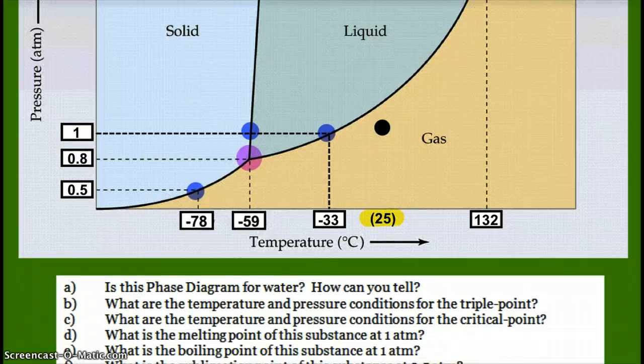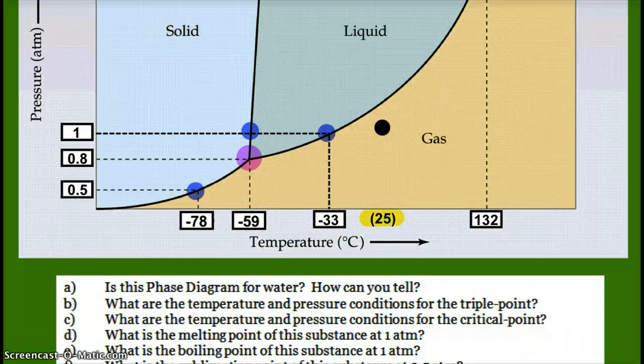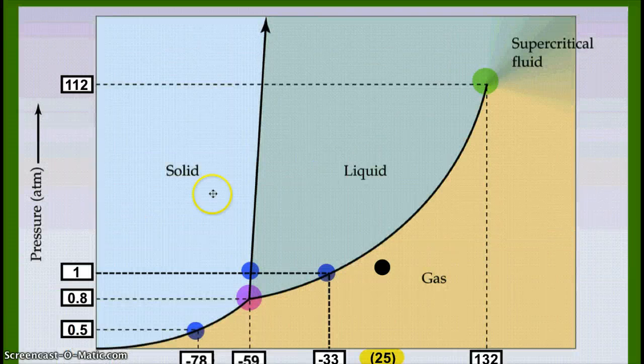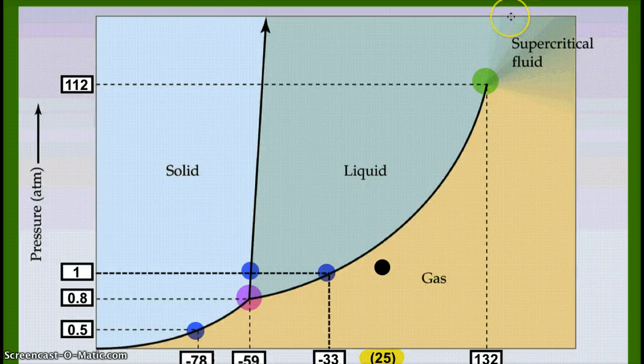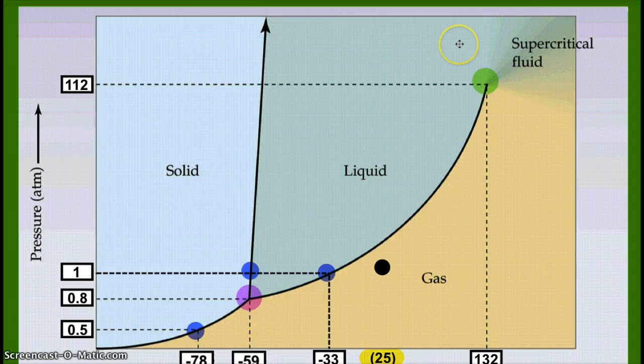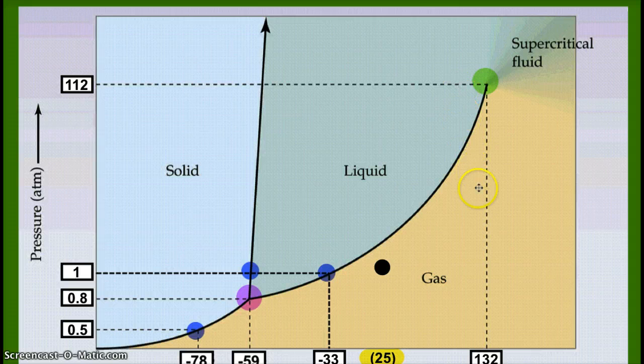Next question, temperature and pressure conditions for the critical point. Our critical point, after our critical point, we get the supercritical fluid. The liquid and gaseous states blend together. That's way up here, our green dot, 112 atmospheres of pressure, 132 degrees Celsius.